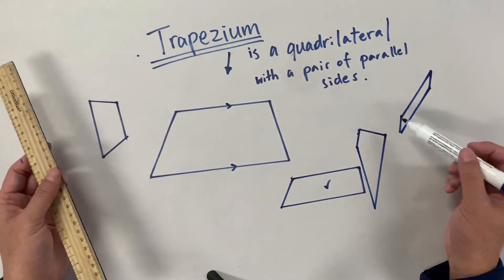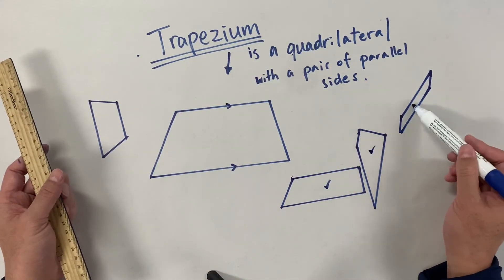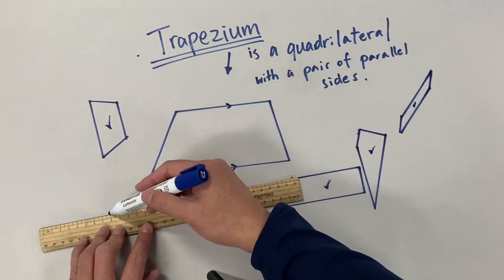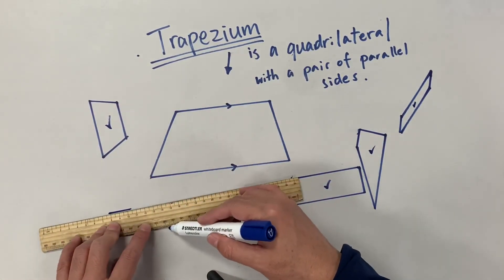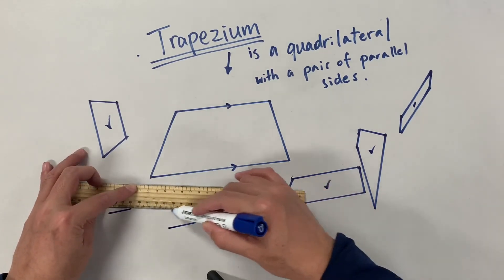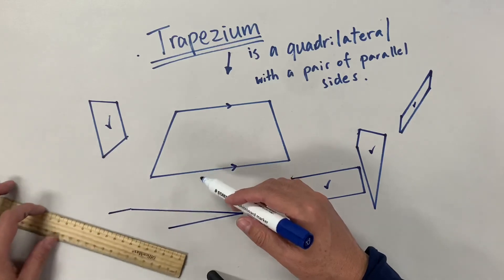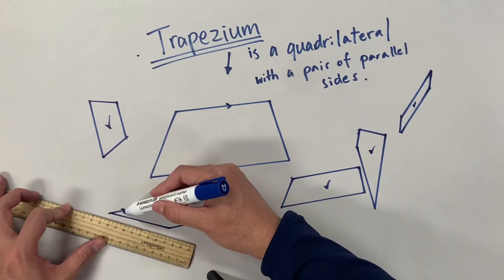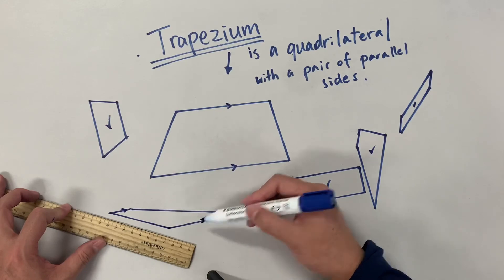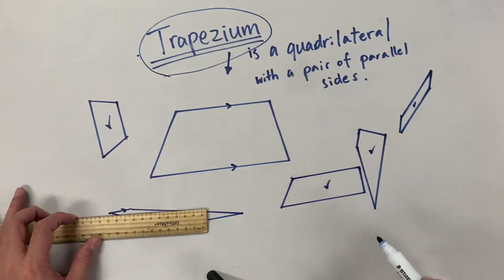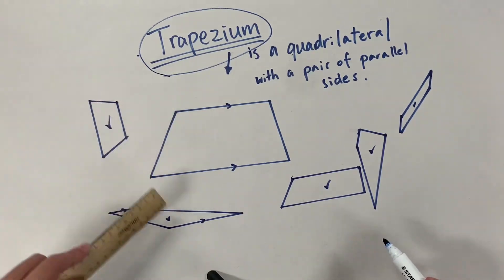I wonder how many different types of trapeziums you made. But it's quite easy if you have a ruler. Well, this is a tricky one, isn't it? These two sides are parallel. So these are all trapeziums.